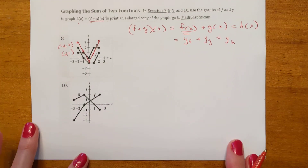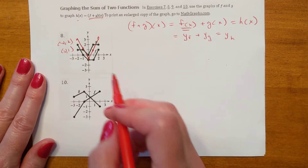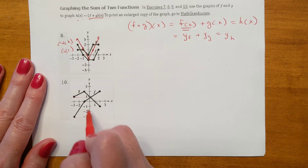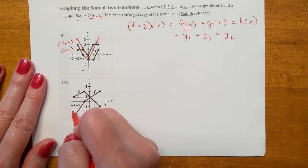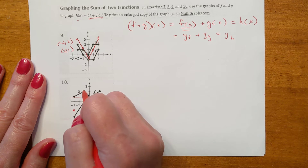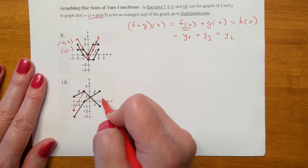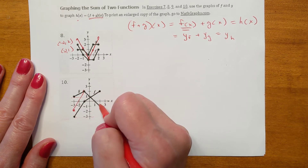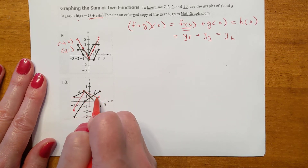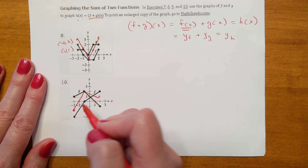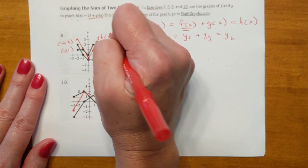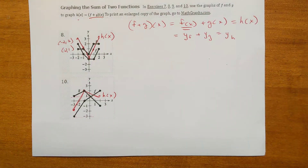Same thing on number 10 — adding together y values. One y value is 1, another is negative 3, so 1 plus negative 3 is negative 2. Over here you get 0 plus 2 equals 2. And negative 1 plus 2 is 1. When you combine those two functions you get the new h(x).